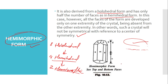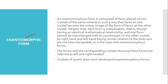Tourmaline is an example of a hemimorphic form. You can observe that only at one extremity has the development of faces taken place. Another very important category is enantiomorphic forms.